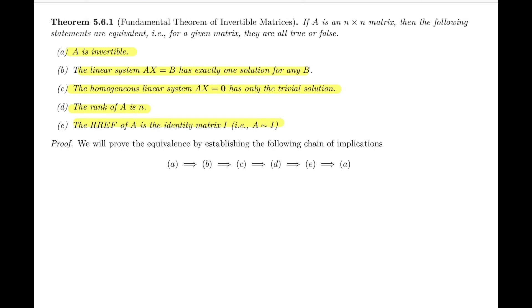To establish this equivalence, in the proof we're going to establish the chain of implications: a implies b, b implies c, c implies d, d implies e, and we'll close the chain with e implies a, going back to a. So we can think of it as a cycle of implications.